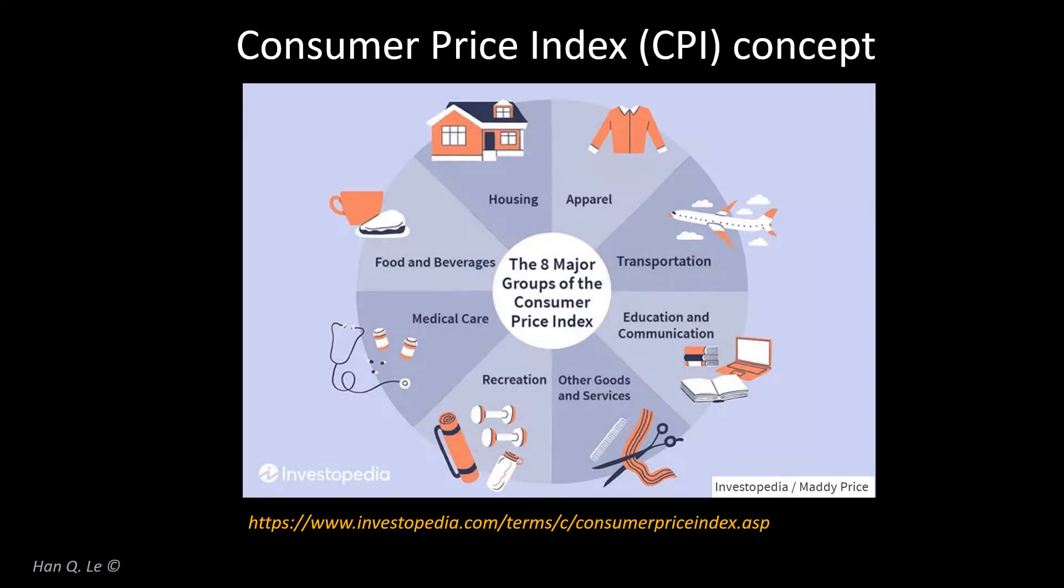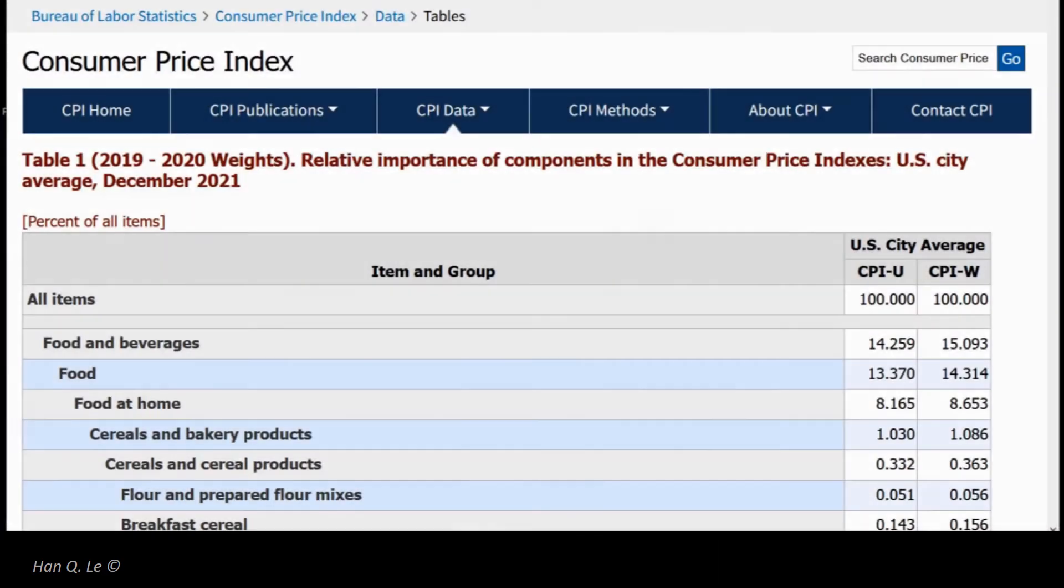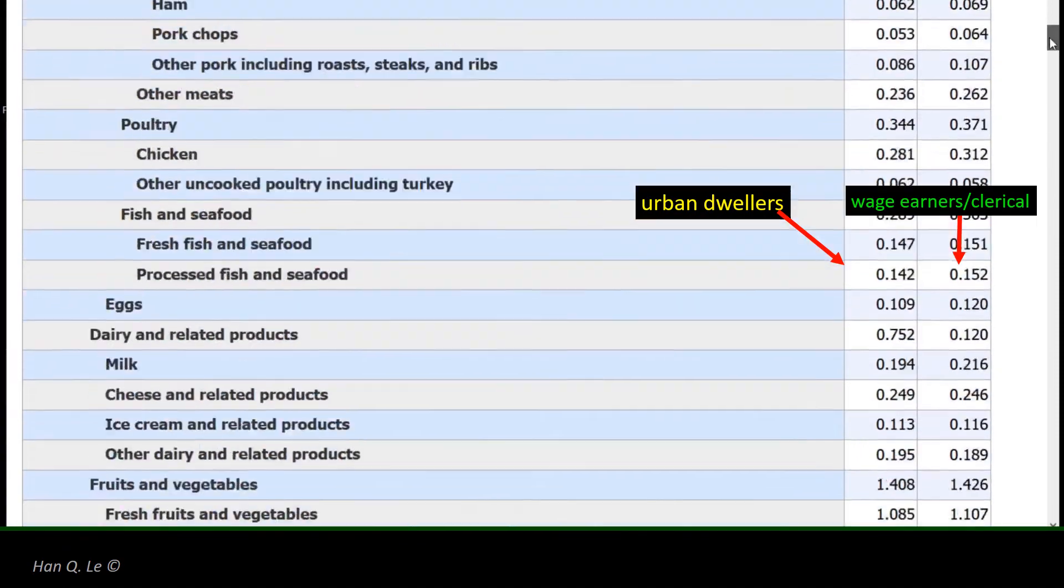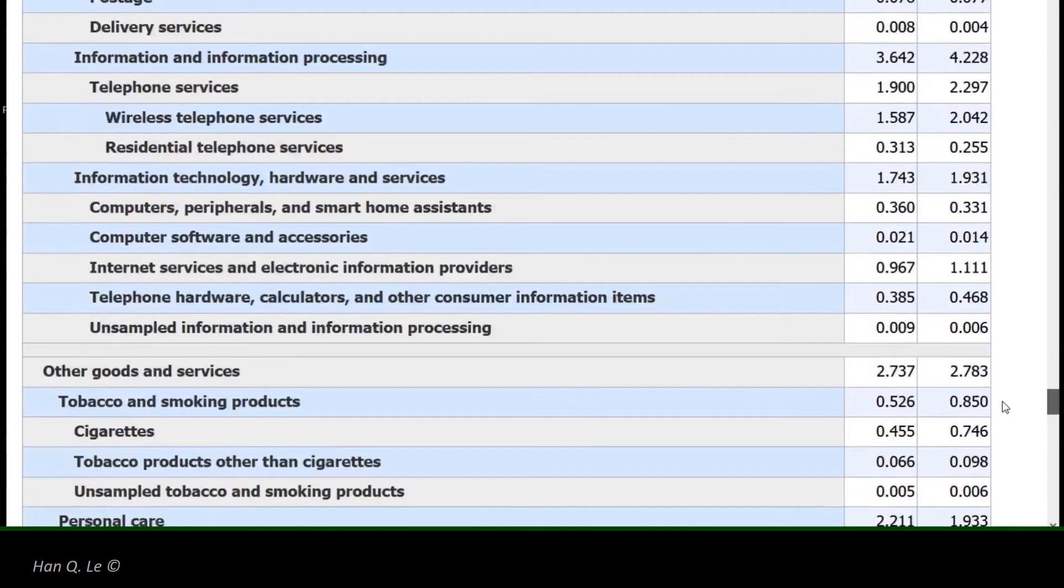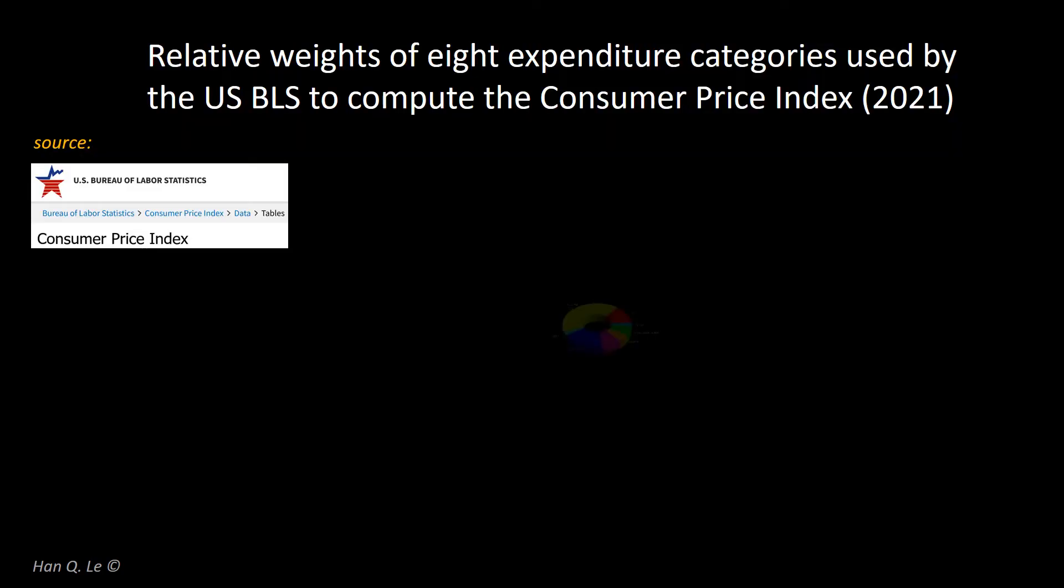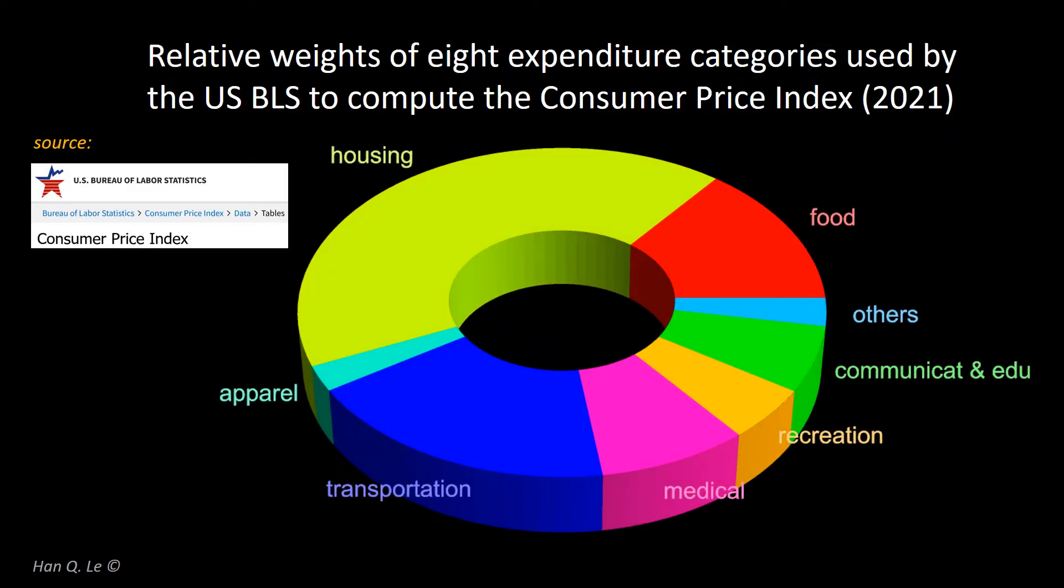Consumer Price Index is an estimate of the cost of common goods and services for a typical consumer. The US Bureau of Labor Statistics compile a list of goods and services and estimate their relative weights. Of the eight categories, three largest expenditures are housing, transportation, and food.